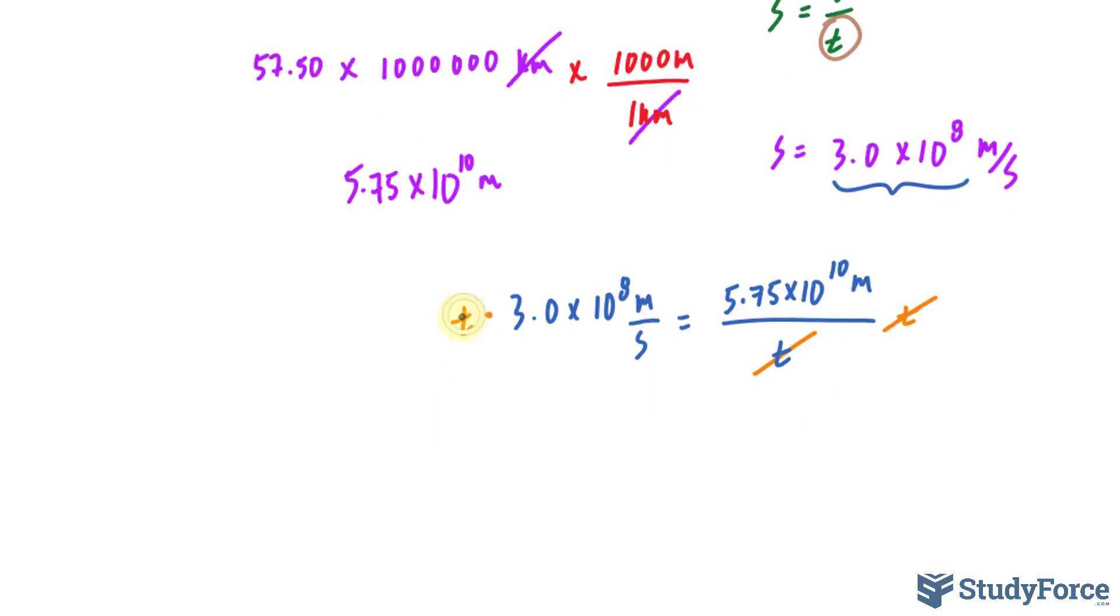So, right now, we have T times this number is equal to that number. Let me erase these T's. Finally, if we want to isolate for T, we will divide both sides by that factor. Okay, I'll show that. Now that I've written it all down, dividing these two out will give us the time in seconds.